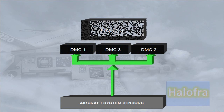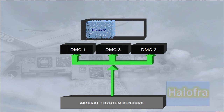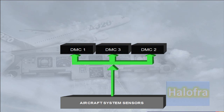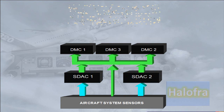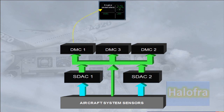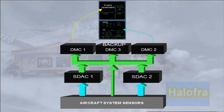Note that there are separate channels within each DMC for ECAM and EFIS. For the majority of the systems, the sensors supply data to two system data acquisition concentrators, SDACs. The SDACs acquire system data, process it, and send some of it as system page data to the three DMCs. Normally, DMC-1 supplies the engine warning display, DMC-2 supplies the system display, and DMC-3 is available as a backup.